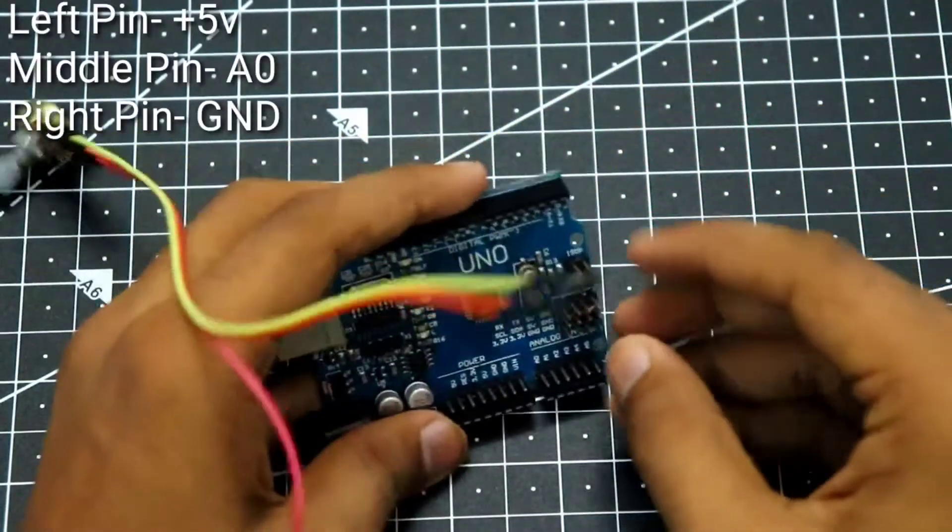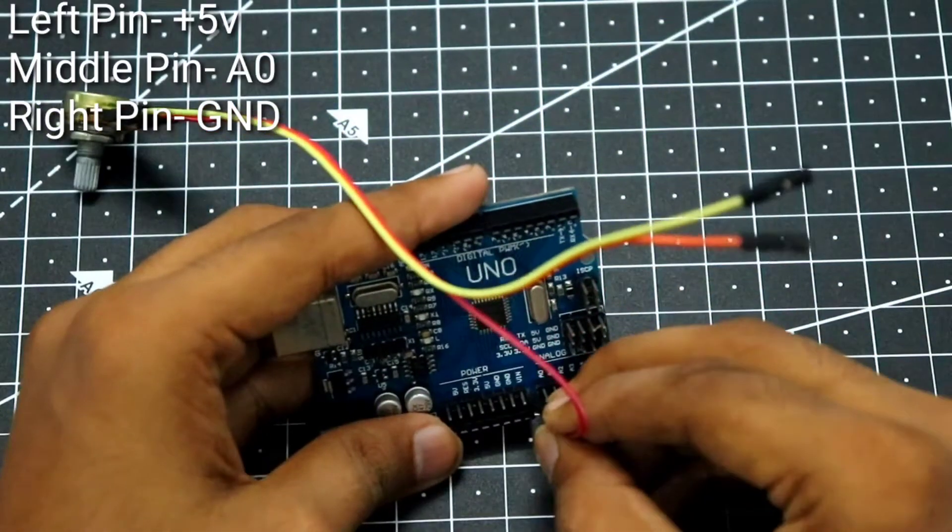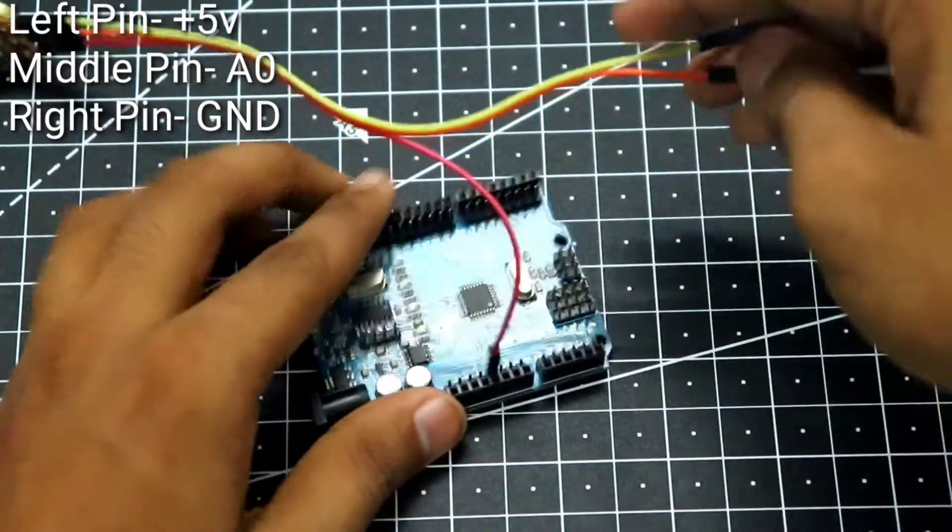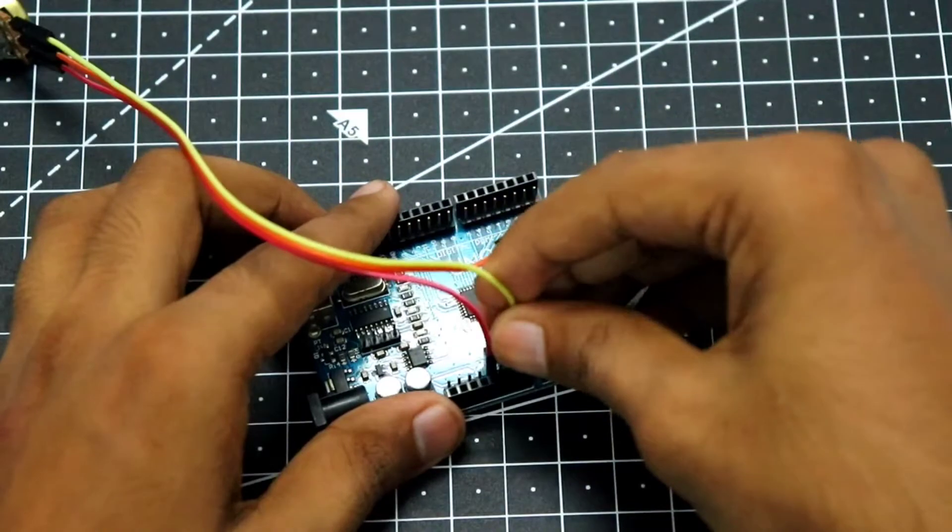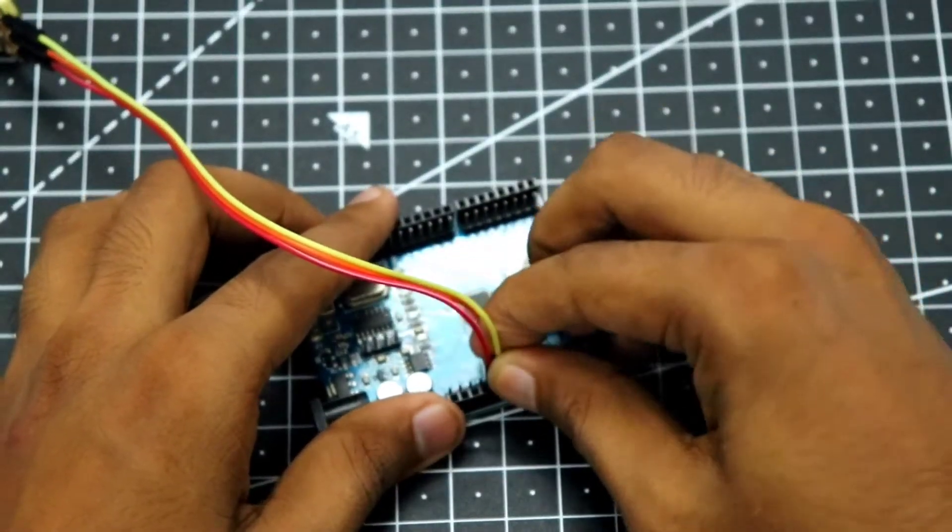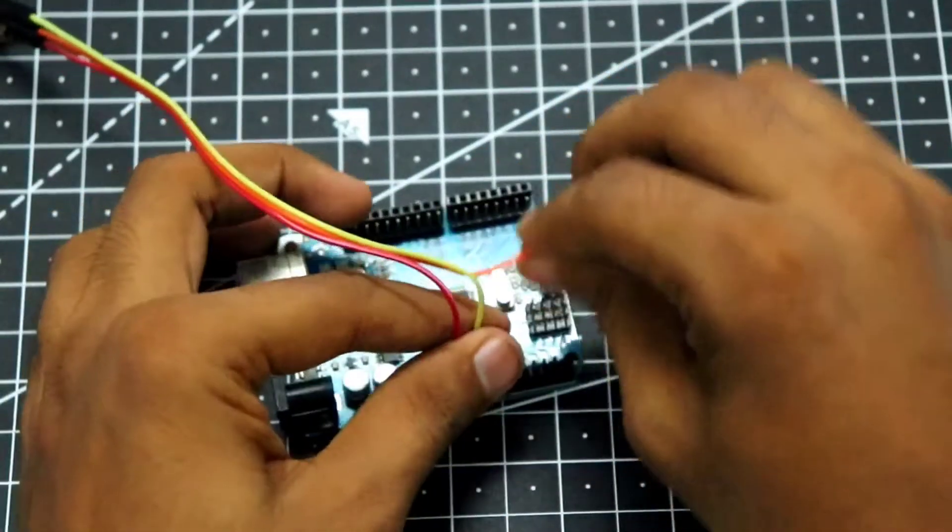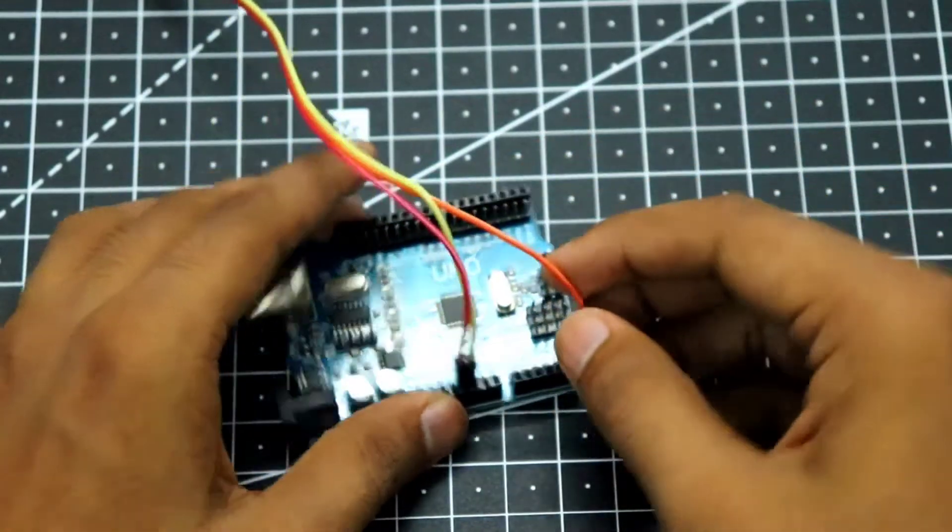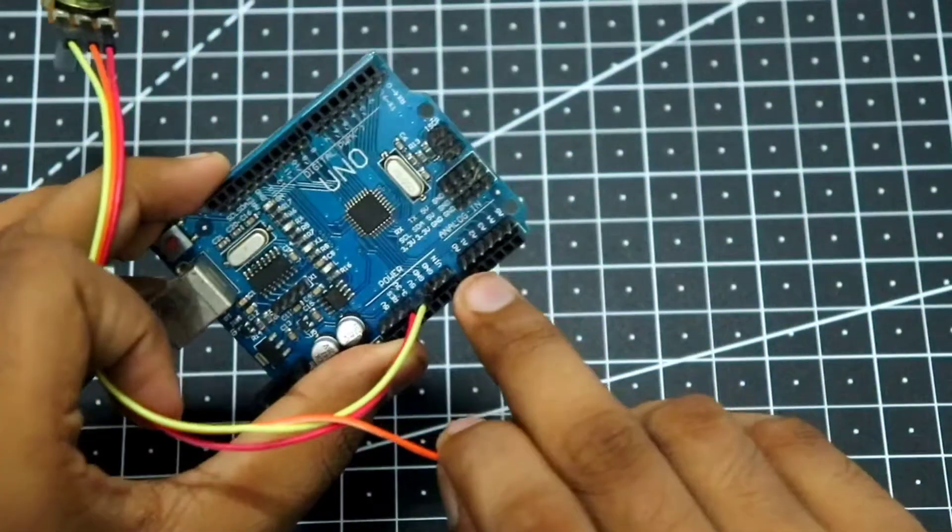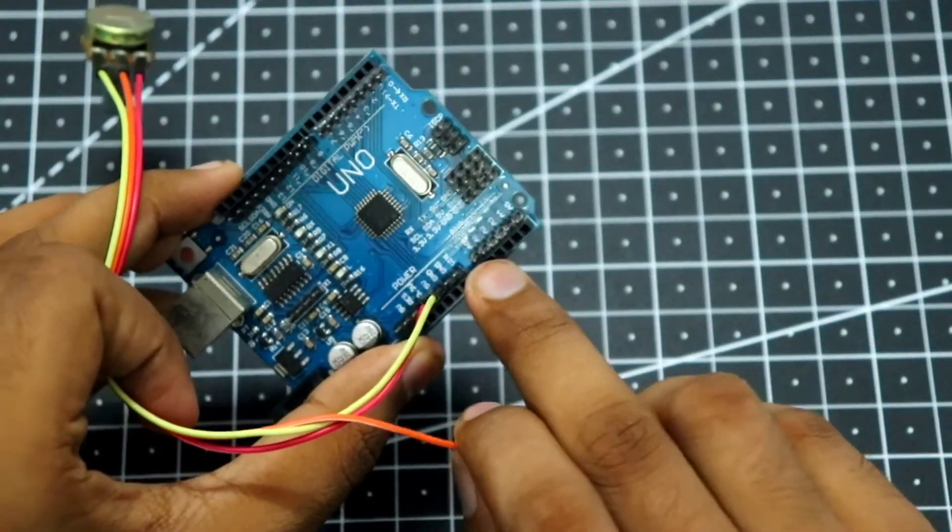Let's connect the red wire here to the plus 5 volts, and then the yellow pin to the ground. And then the orange pin, which is going to be our signal pin, we are going to connect to the analog zero output of the Arduino, which is right over here.